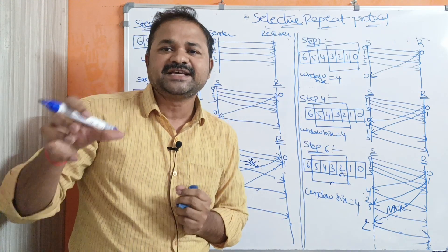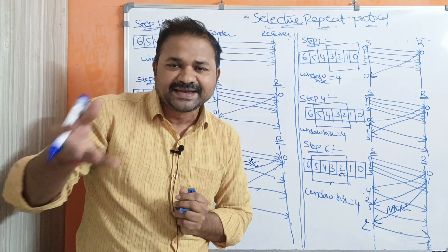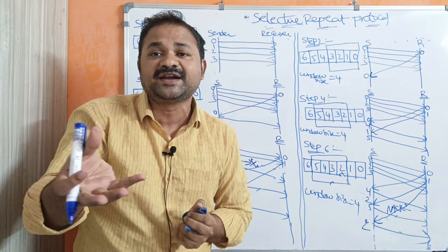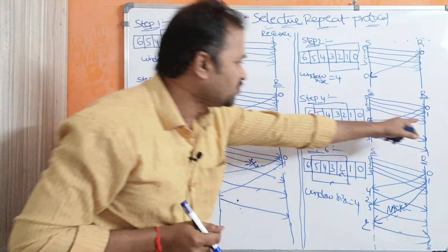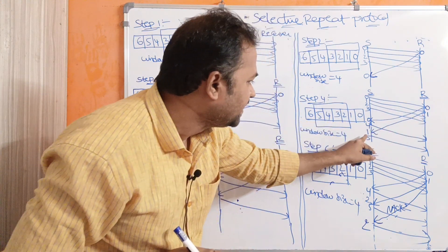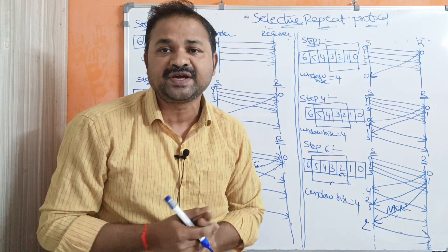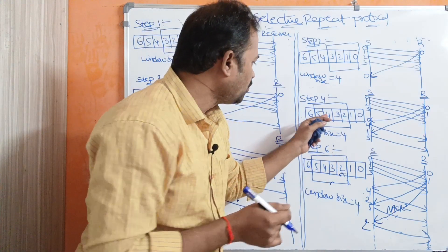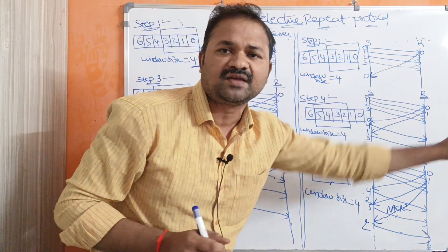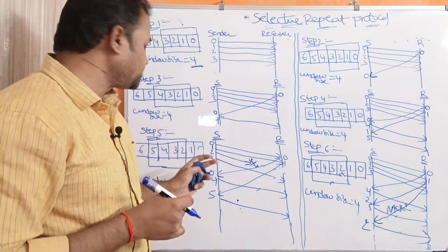After some time, the receiver receives frame number 1 and provides acknowledgement 1 to the sender. The window then slides to frames 2 to 5, maintaining a window size of 4.